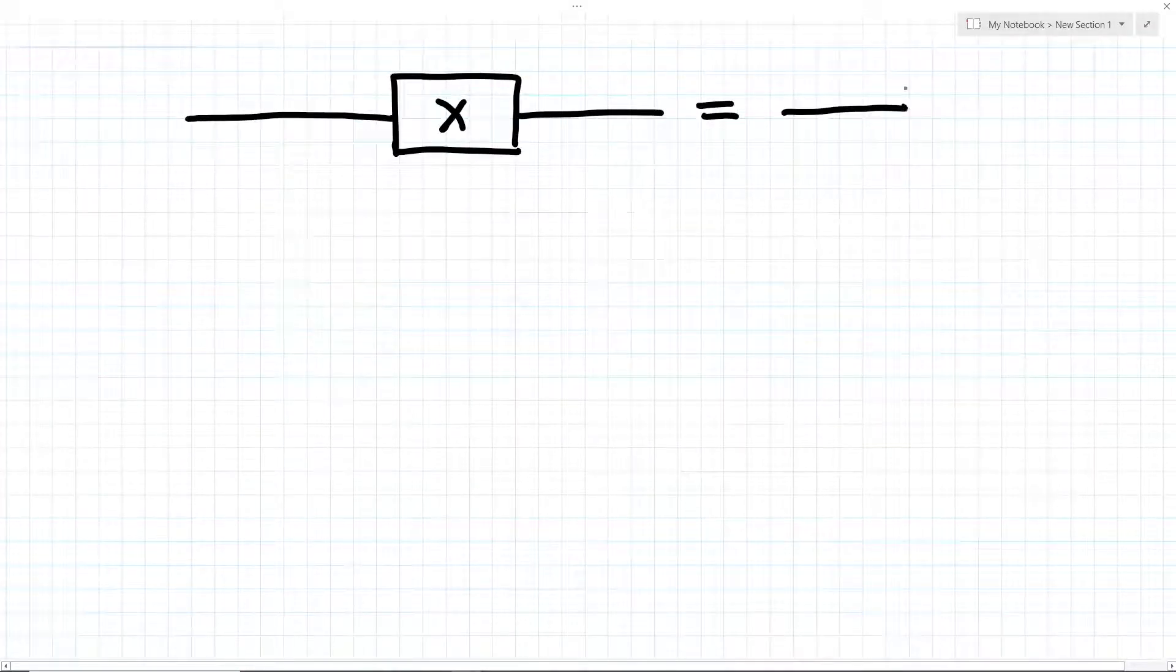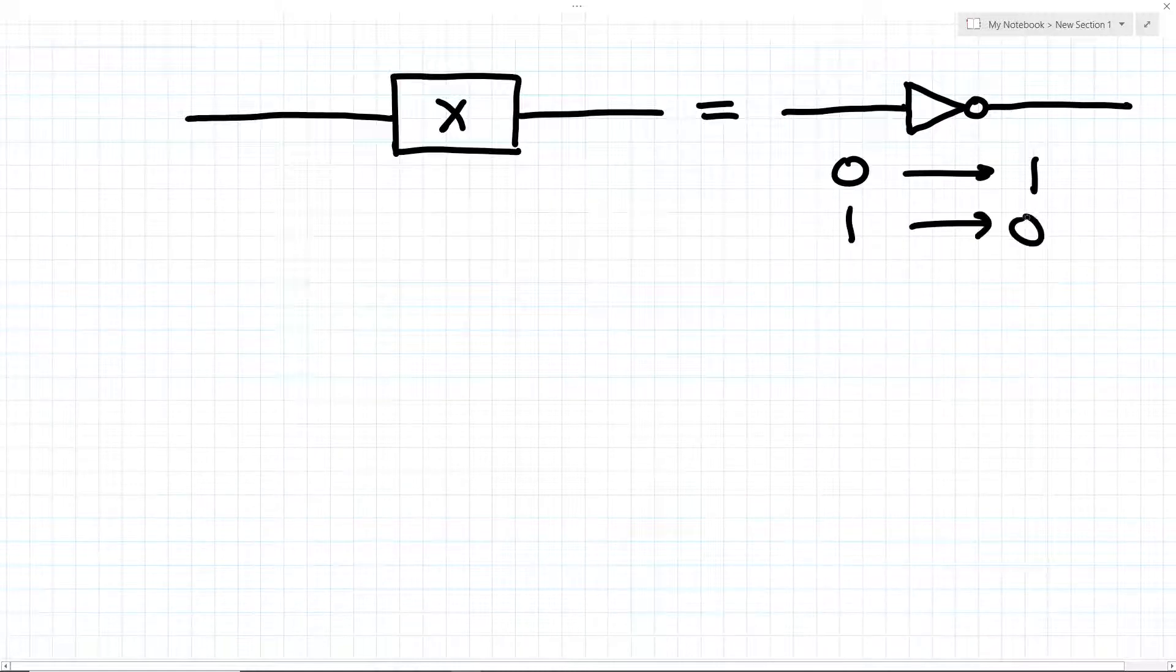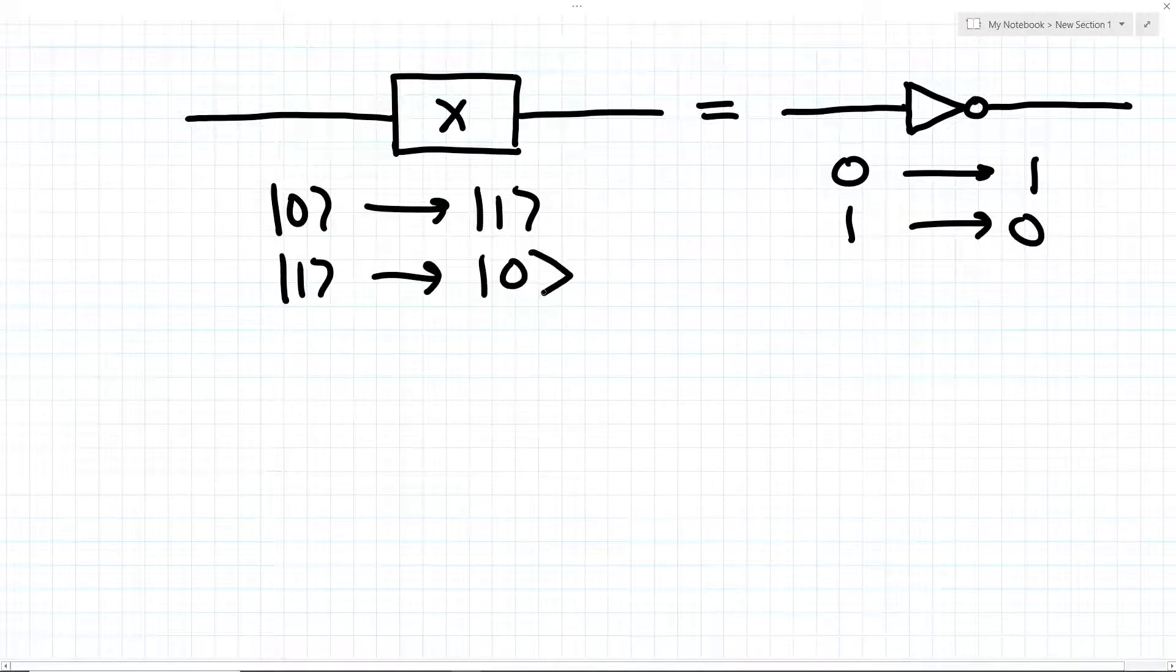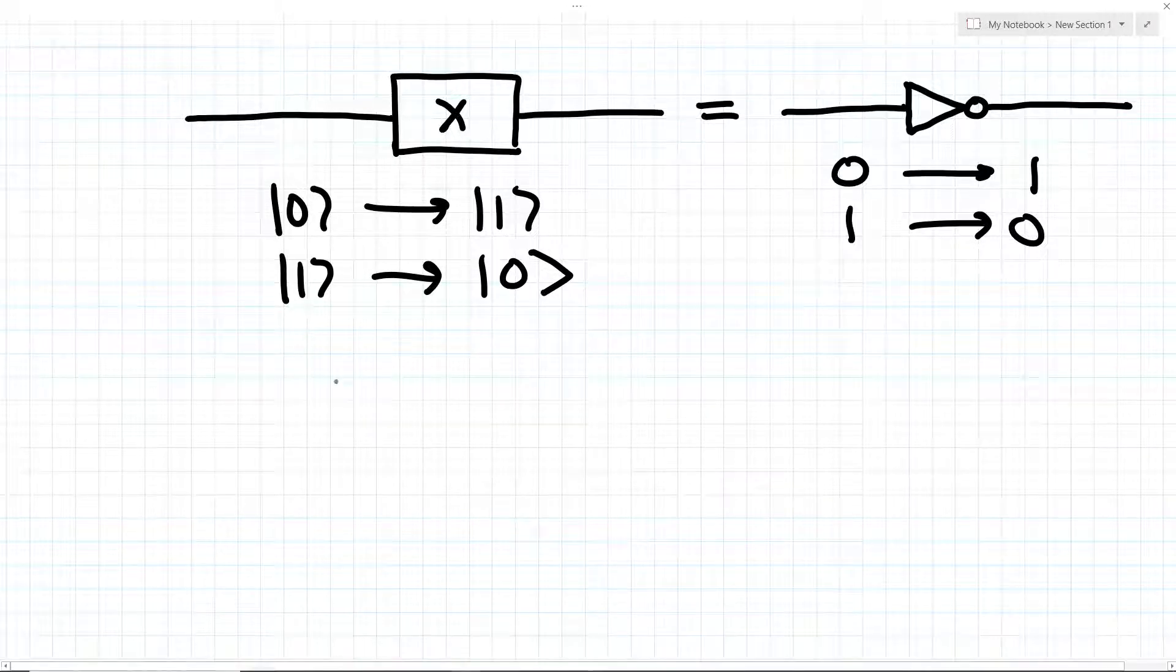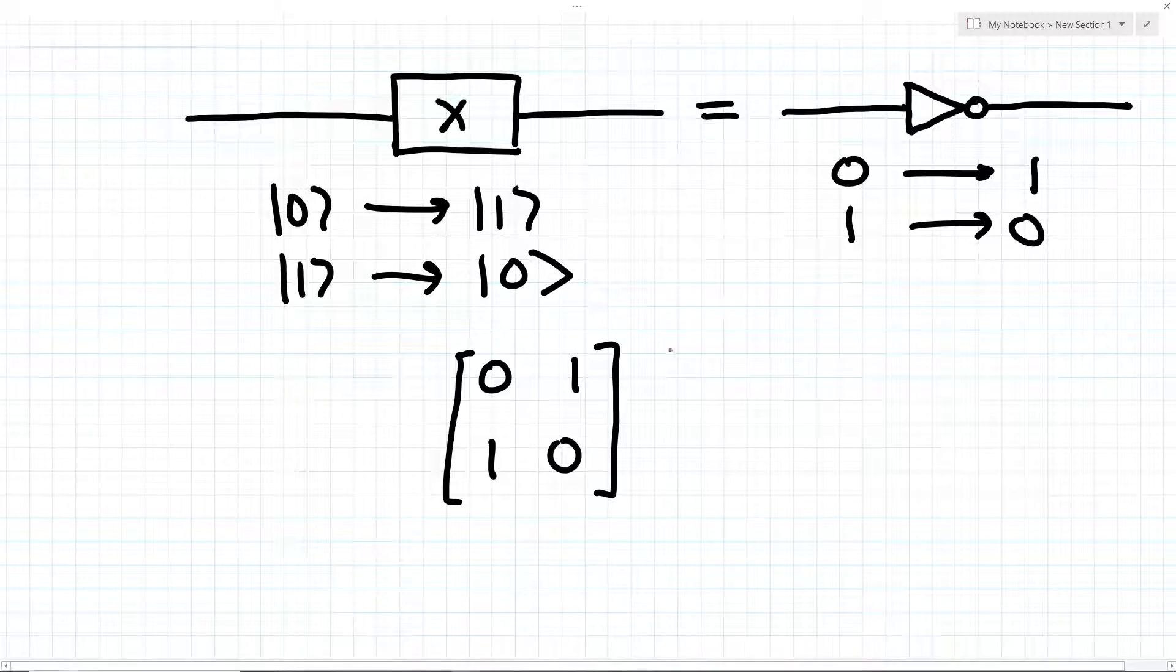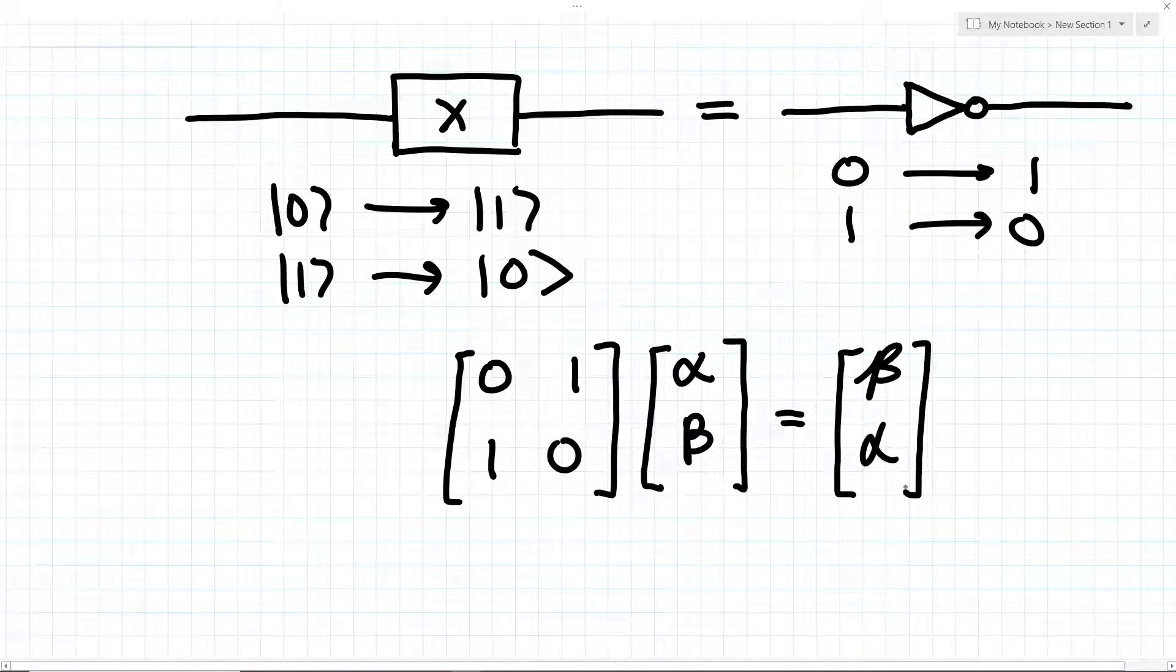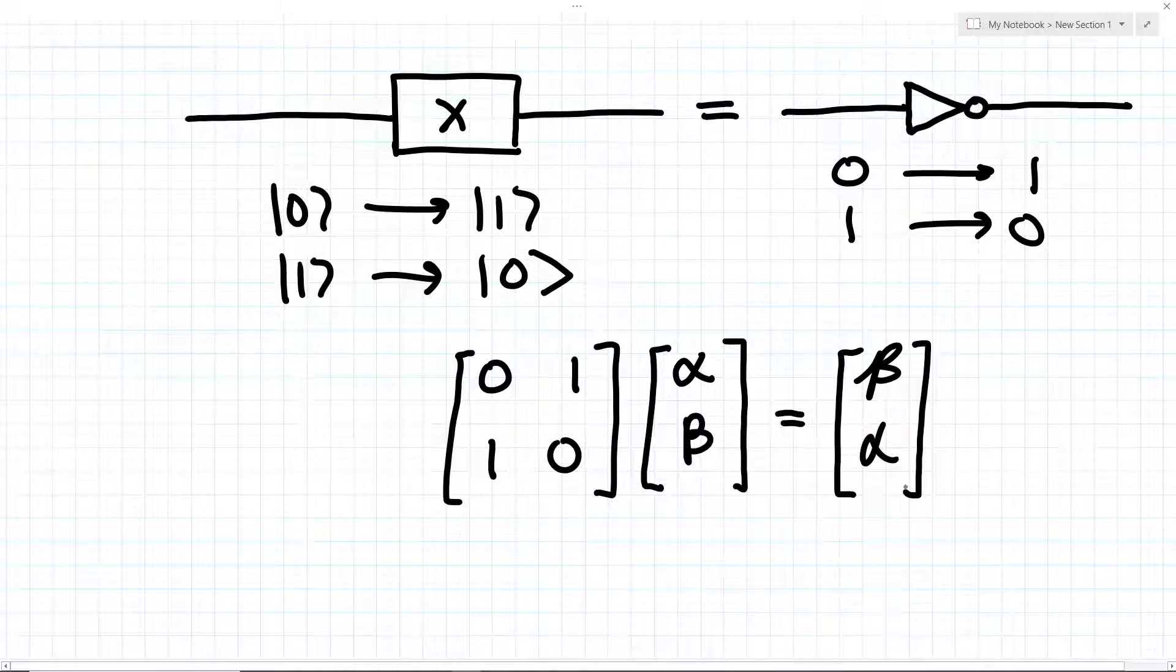So back to gates. The X gate is like the classical NOT gate. It maps the zero state to the one state, and the one state to the zero state, just like how a NOT gate works on a classical bit. However, an X gate is more powerful because it can act on any qubit state. An X gate is represented by a matrix like this. From this matrix, we can see that an X gate will swap the amplitude of the zero and one state, so it always flips the probability of measuring a zero or a one.